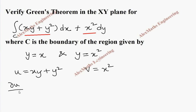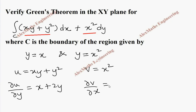Let's find ∂u/∂y. Since x is a constant, differentiation of y is 1 and y squared is 2y. So ∂u/∂y equals x plus 2y. And ∂v/∂x equals 2x. The given boundaries are y equals x and y equals x squared.